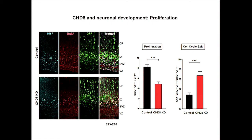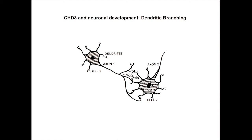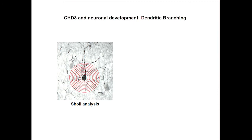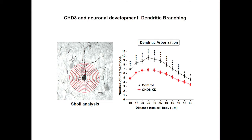With a similar experimental setup, but letting the neurons develop until postnatal day 7, we compared neuronal morphology between control and CHD8 knockdown neurons. Dendritic branching is important because it determines the number of connections one neuron can make with another. We counted the number of dendrites by Sholl analysis, and surprisingly, with CHD8 knockdown, there were significantly fewer dendrites throughout the distance from the cell body. Looking at both the proliferation data and the dendritic branching data, we think CHD8 regulates a large portion of brain development.